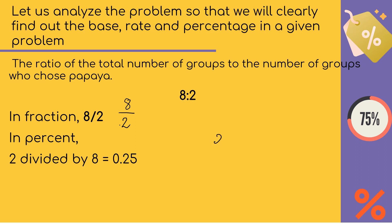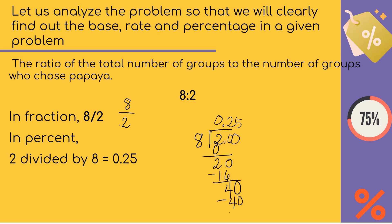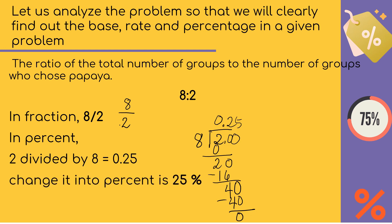Adding zero again: 40 divided by 8 equals 5, 5 times 8 equals 40, 40 minus 40 equals 0. So it becomes 0.25 or twenty-five hundredths. To change 0.25 into percent, we move the decimal point two places to the right — since 100 has two zeros — and put the percent sign instead. So it becomes 25 percent. Therefore, we can write: 25% of 8 is 2.